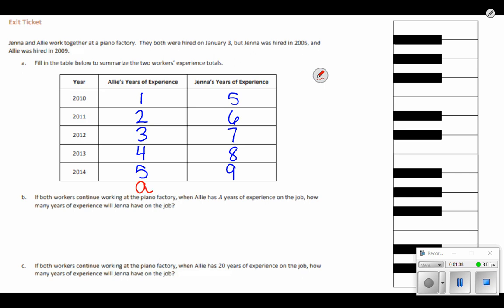if this is A, how do I find Jenna's? Well, each and every single time, hers is four more. And so my pattern, if I know that Allie's is A,